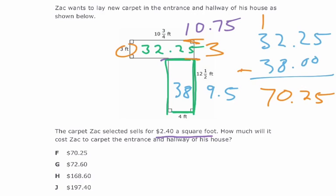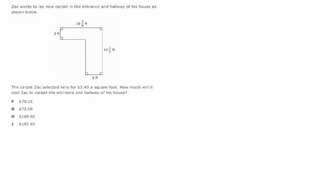So, 70.25, we're going to still have to multiply it by $2.40, because for every square foot, it's going to cost him $2.40. If we're going to multiply 70.25 times $2.40, just, again, using my number sense. I know it's not going to be F, because we're going to multiply this number by 2. We're going to at least double it. And it's not going to be G either. So, I'm really only going to consider the bottom two.